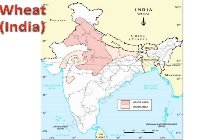Punjab, Haryana, some part of Jammu and Kashmir, Himachal Pradesh, Rajasthan, western Uttar Pradesh, and some part of Madhya Pradesh are the major wheat growing areas. Minor areas include eastern Uttar Pradesh, some part of Bihar, Rajasthan, Gujarat, Madhya Pradesh and Maharashtra.